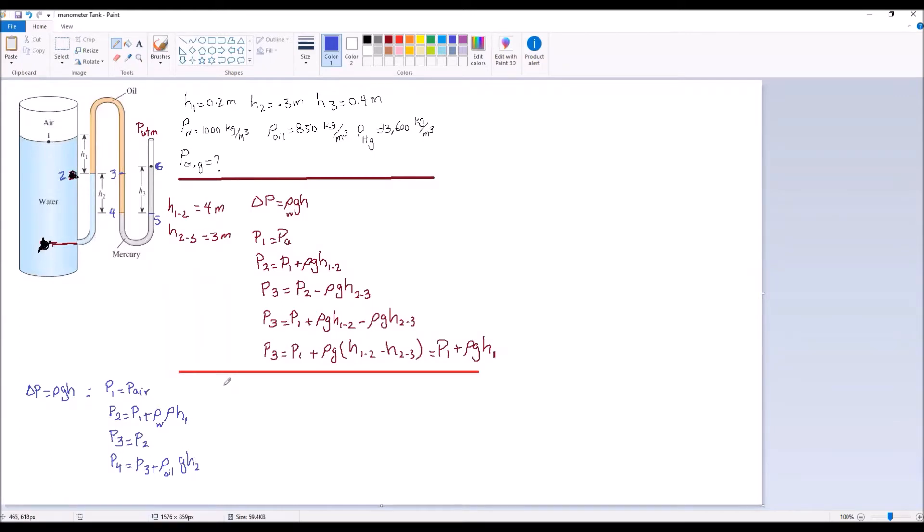Then we move to point 5. P5 is equal to P4 because it's at the same level. Then the last point is P6. P6 is from 5 to 6 we're moving up, so we have to subtract. P5 minus rho, and for this case, the fluid is mercury. Rho mercury GH, which in this case from 5 to 6 is H3.